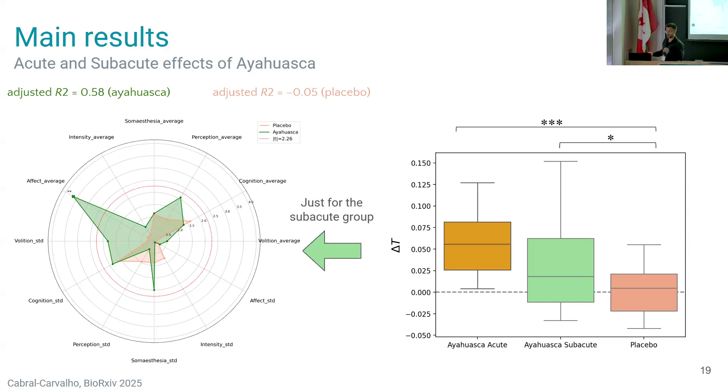What we measured by the hallucinogenic rating scale can actually explain this increase in temperature. The interesting thing here is there is one specific dimension that is really good at predicting this increase in temperature, which is the changes in your emotional system. So it looks like people that report big differences in their emotional systems also show a bigger entropy, an increase in entropy, even one day after ingestion.